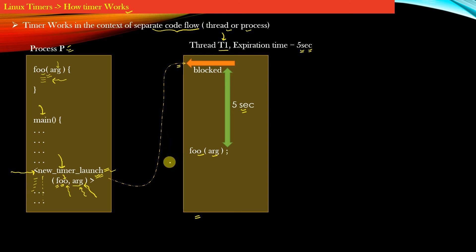So you can see this is how timer works. The function foo represents the unit of work which we need to do when the timer fires. So the function foo will be triggered only after 5 seconds has elapsed after the API new timer launch was invoked.